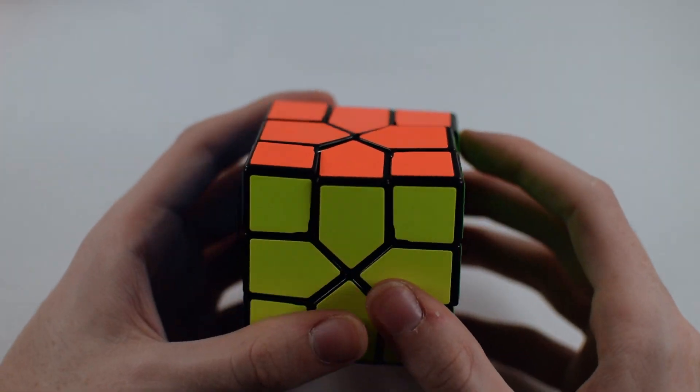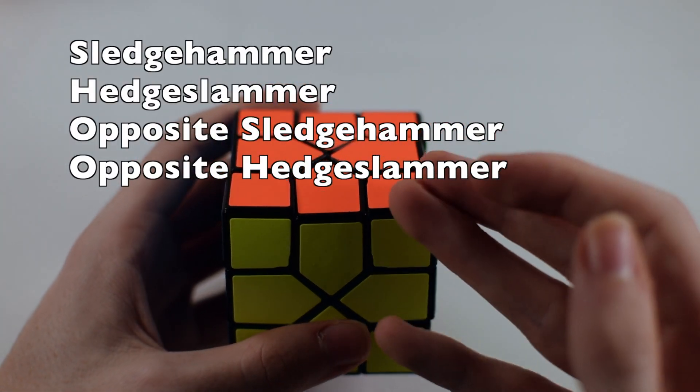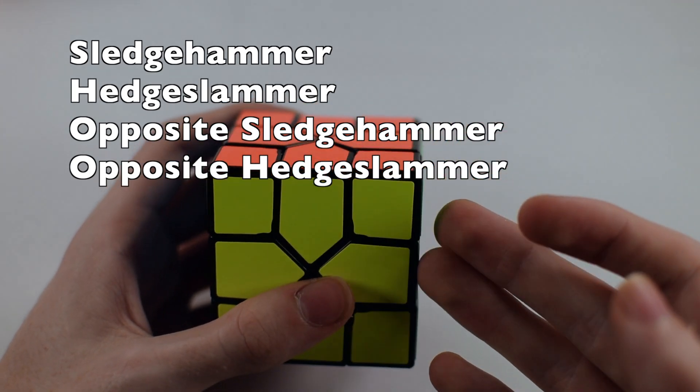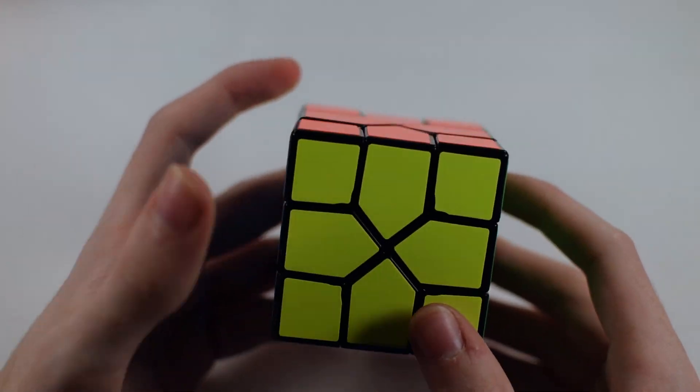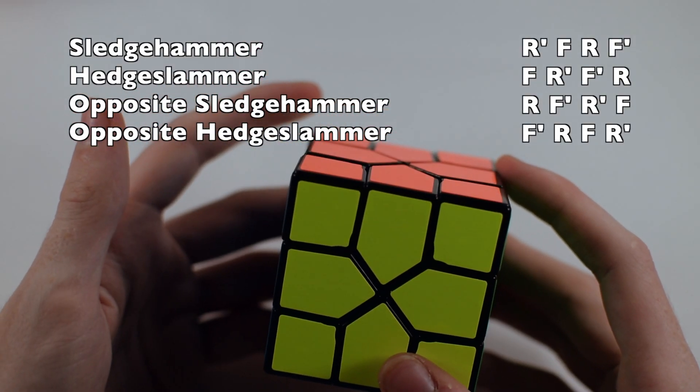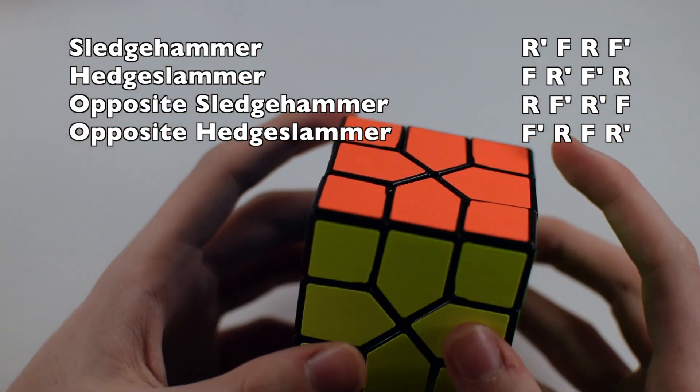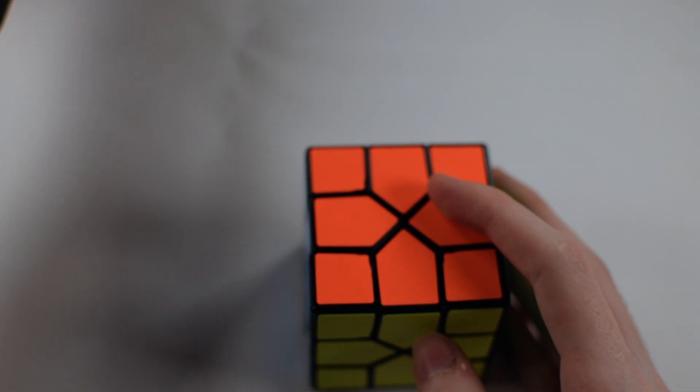Now this may be confusing. But simply put, there's only going to be four algorithms. So there's going to be sledgehammer, hedge slammer, opposite of sledgehammer, and then opposite of hedge slammer. So that's how that will work. I will list all the algorithms and all the different cases. So it'll break it down a little easier for you guys.